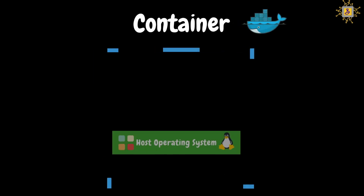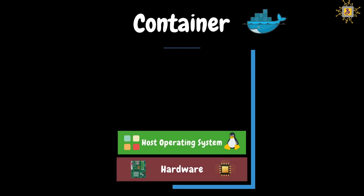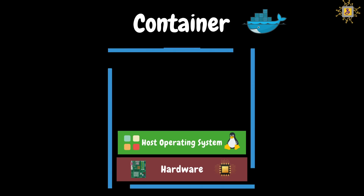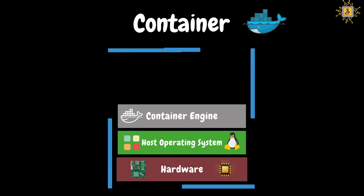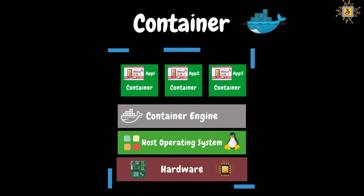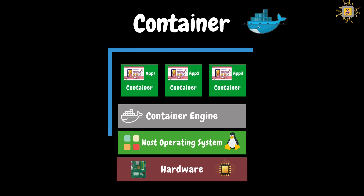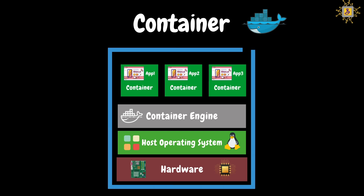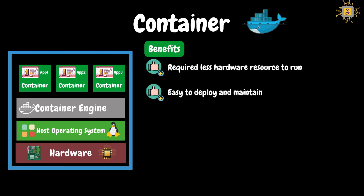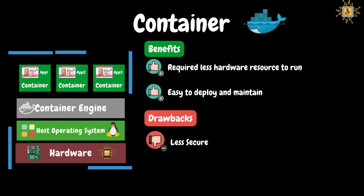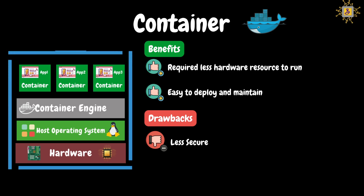Now let's look at containers. A container is a lightweight and standalone package of an application with all its dependencies like libraries, frameworks, and its runtime. Like the other models, we have hardware and a host operating system. Instead of virtualizing the hardware with hypervisor software, we virtualize the operating system with software called a container engine. On top of the container engine, many containers run, each with an isolated application environment. The container engine provides faster resources to these containers to run the application. Since all application dependencies and libraries are packaged together, they can run anywhere irrespective of the host operating system, as long as it has the container engine. Benefits: containers are lightweight and require fewer hardware resources — a physical server can host more containers than virtual machines. They are easier to deploy and maintain. Drawback: containers are potentially less secure, as they are exposed to security vulnerabilities at the OS level since they share the same host operating system.